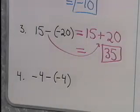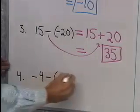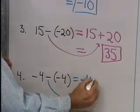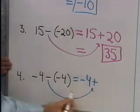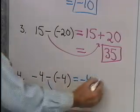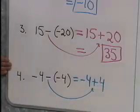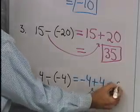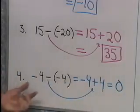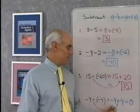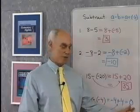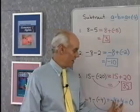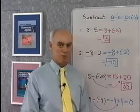Negative 4 subtract negative 4. That will be negative 4 — instead of subtraction, I change to addition. Instead of negative 4, I write its opposite, positive 4. Negative 4 plus positive 4 turns out to be simply 0. So negative 4 subtract negative 4 comes out to be 0, found by changing subtraction to addition of the opposite and then using the rule for addition.